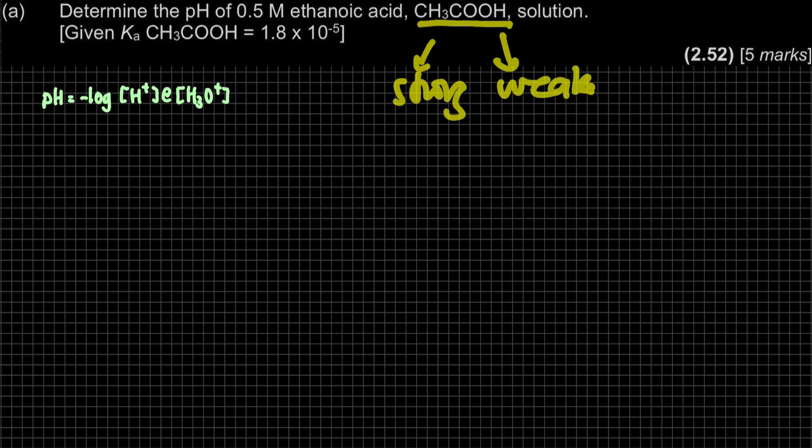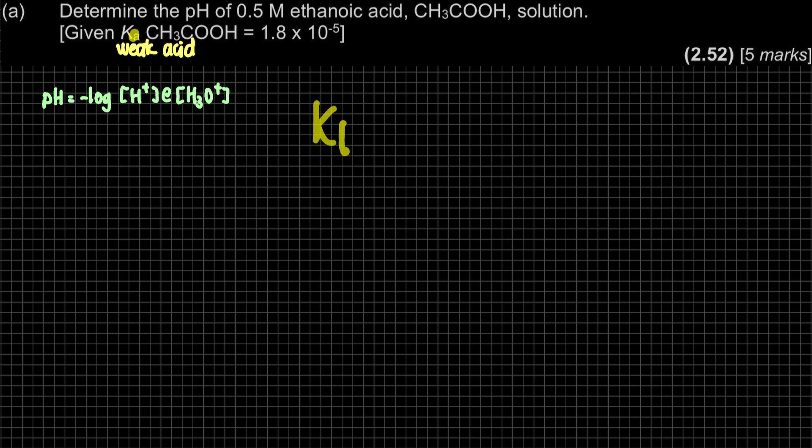How do we know it's strong or weak? If the question gives you the Ka, K means that it is your weak acid. If the question gives you KB, KB is your weak base. A means for acid, B means for base. So this is a weak acid, so we know that when we write down the equation, the arrow must be reversible. Same as our chapter 6, it is reversible. So we have our CH3COOH. Our acid here is in aqueous state.